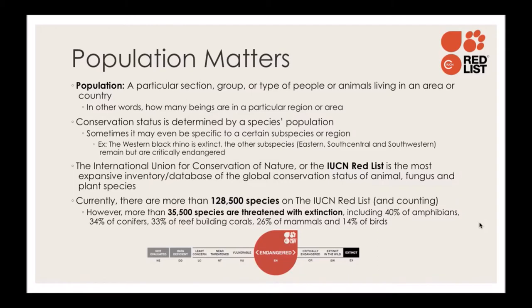When talking about domestic animals we often discuss overpopulation, but for wild animals we're more often talking about underpopulation. Population just refers to how many beings are in a particular area. This is directly tied to a species' conservation status — depending on their population numbers in relation to what would be healthy, that determines if they're endangered, vulnerable, near threatened, or least concerned.